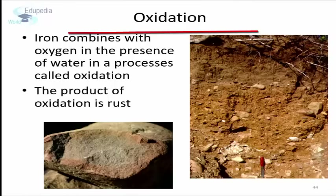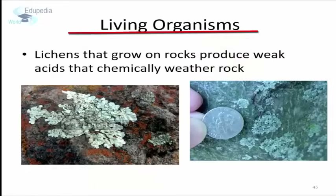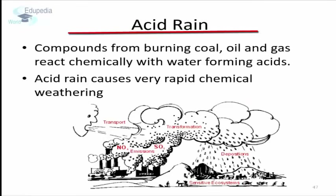Oxidation is another way in which chemical weathering takes place. Oxidation occurs when rocks containing sulfide minerals are exposed to oxygen present in the air. Since iron is very common in nature, oxidation of iron can be easily noticed. Iron changes from the ferrous to the ferric state by the addition of oxygen; it takes on a reddish color, becomes powdery, and is more easily eroded. Living organisms like lichens can grow on cracks and produce weak acids that chemically weather rock. Modern-day pollution has resulted in acid rain — compounds from burning coal, oil, and gas react chemically with water, forming acids that cause very rapid chemical weathering of rocks.